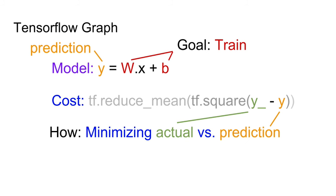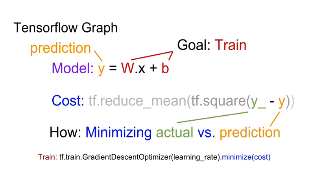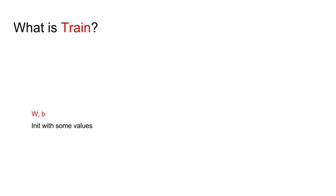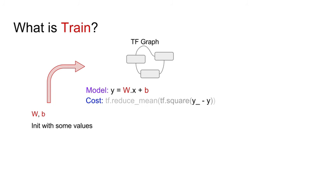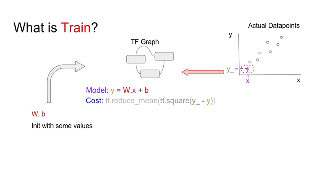To get good values for W and b, our goal is to minimize the cost — minimizing the difference between the actual house price versus the predicted house price. To do that, we need to do training, which is basically gradient descent. We start with some values of b and w, feed them into the TensorFlow graph, then take a data point from our dataset and feed it into the TensorFlow graph as well.